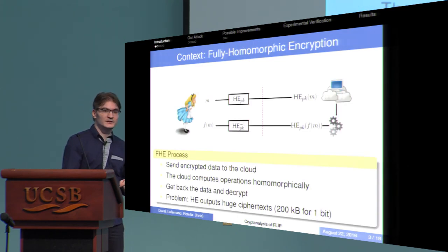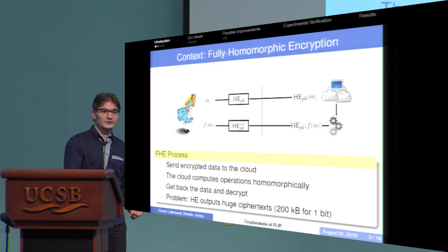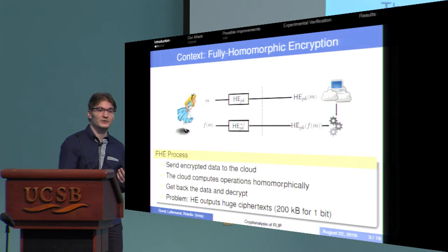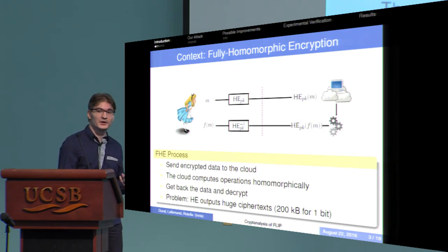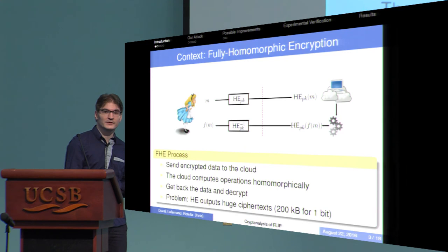Let's go very fast to the basics of fully homomorphic encryption. The idea is you don't have much computational power, so you want to delegate your computations to the cloud. You are going to send your data to the cloud, but you don't want the cloud to get any information about your data, so you are going to encrypt it using a homomorphic encryption algorithm. The cloud will perform its operations homomorphically and then send the data back to you, you decrypt it, and you get the message modified in the right manner.